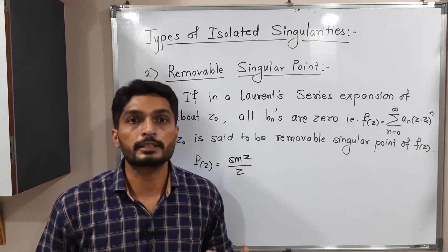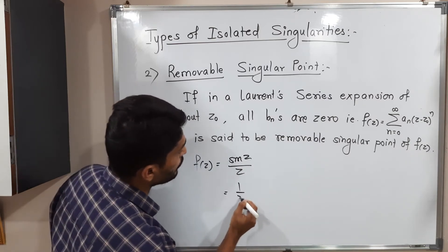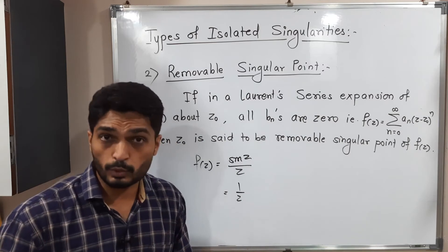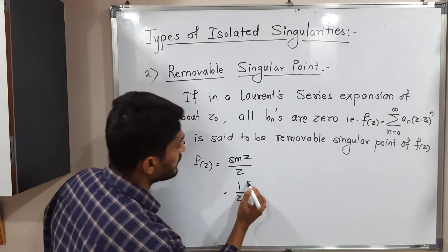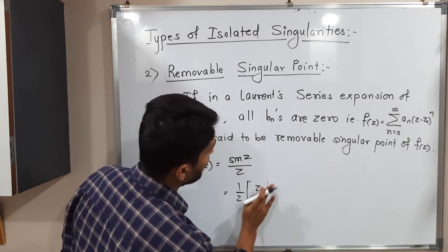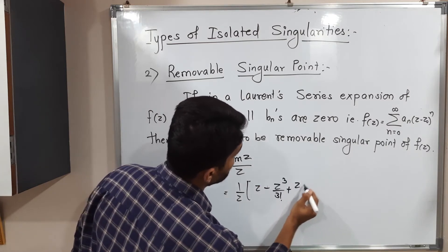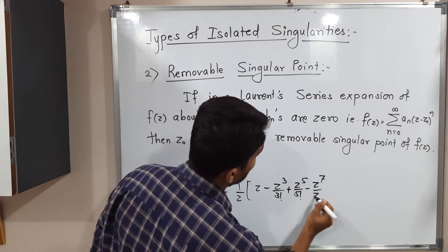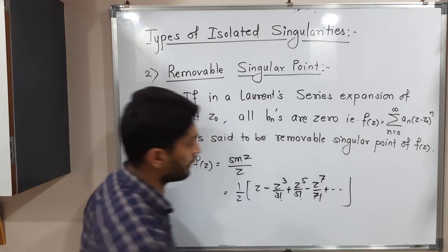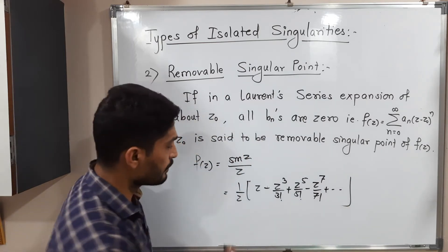But let us find the Laurent series expansion and discuss whether this is a singular point or not. This equals—I will take 1/z outside times sin z. You know the expansion of sin z: it is z - z³/3! + z⁵/5! - z⁷/7! and so on. If you multiply each term by 1/z, let us see what will happen.